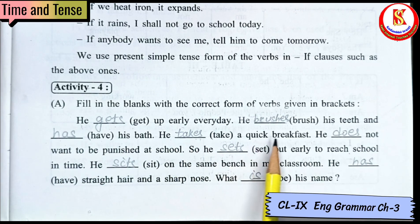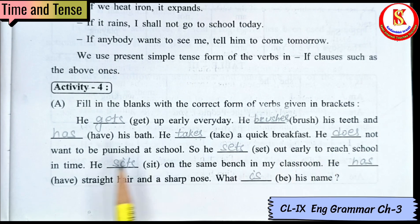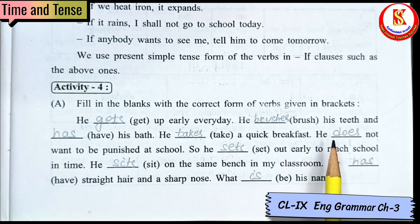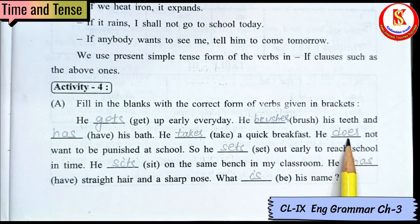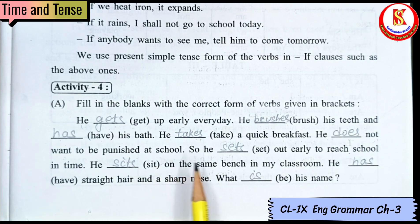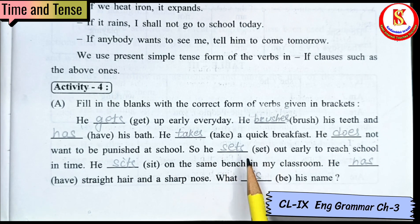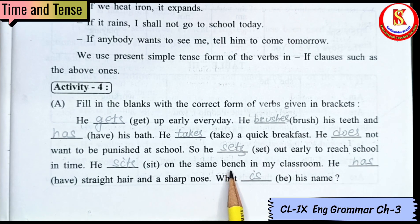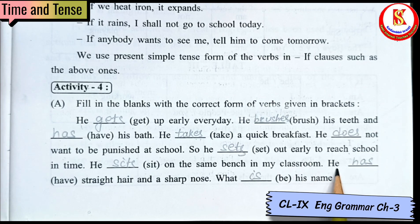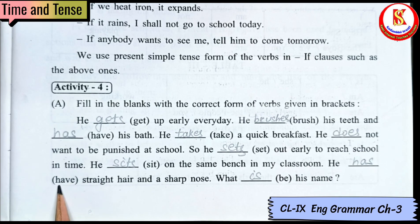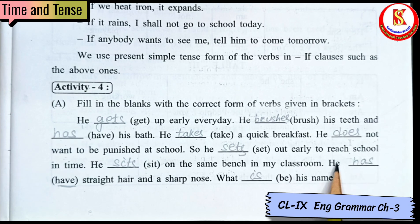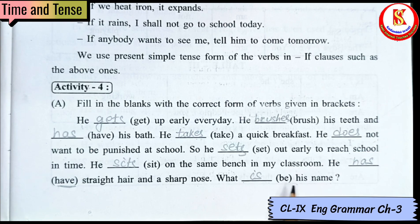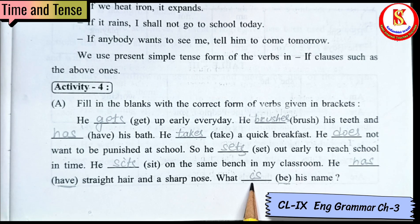He takes a quick breakfast. He does not want to be punished — so for present simple with 'does not', the verb stays in base form: 'want'. He sets out early to reach school in time. He sits on the same bench in my classroom. He has straight hair and a sharp nose. His name is fine.